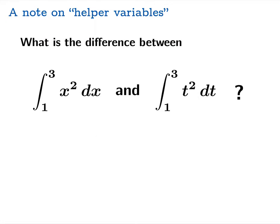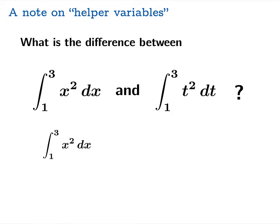Let's look at an analog with integration. What's the difference between these two definite integrals? If you evaluate the definite integral on the left side using the fundamental theorem, we can find an antiderivative of x squared — 1/3 x cubed — substitute 3 and 1, and we're going to get 26/3.